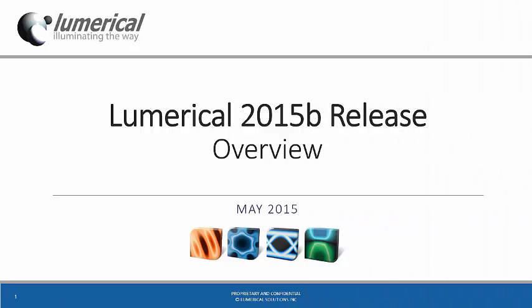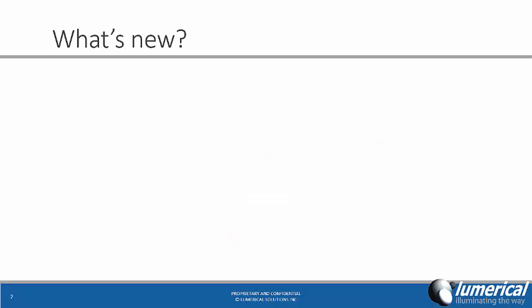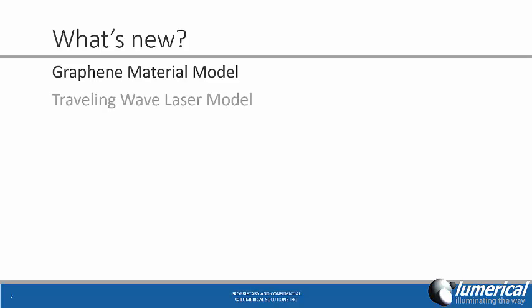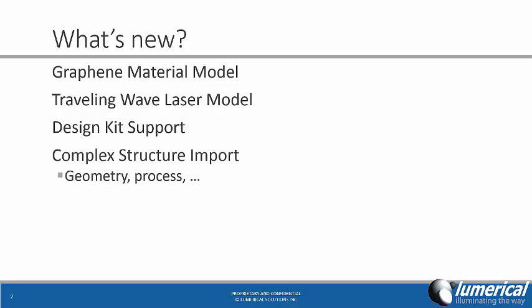Welcome to this brief overview of the major new features in Lumerical's 2015B software release. The new features include an improved material model for graphene, a traveling wave laser model, design kit support, and additional options for complex structure import.